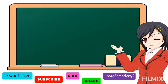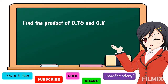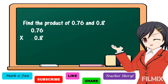Another example. Find the product of seventy-six-hundredths and eight-tenths. To get the answer, first we're going to write in column. Then we multiply just like multiplying whole numbers. So, seventy-six times eight: eight times six is equal to forty-eight, write eight and regroup four. Eight times seven is equal to fifty-six, plus four is equal to sixty.